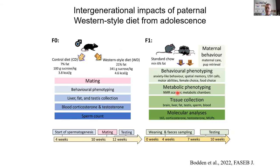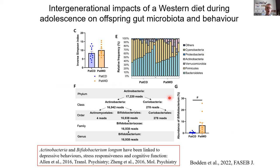In a completely separate study, we've looked at Western style diet — increased high fat, high sugar diet — following up earlier work from Margaret Morris and others. Karina Bodden was able to show that this junk food or Western style diet in father mice led to a range of different behavioral changes in the offspring, and interesting changes in the gut microbiome of the offspring that can be linked to those changed behaviors.